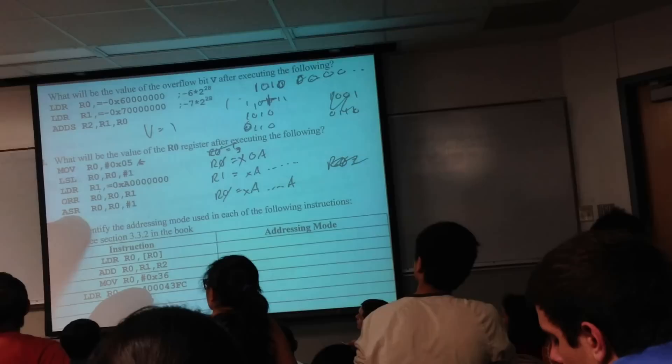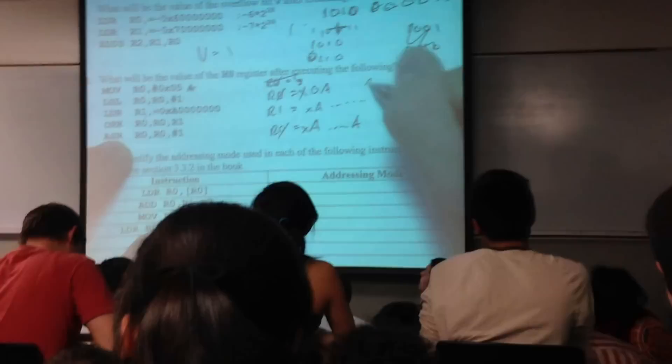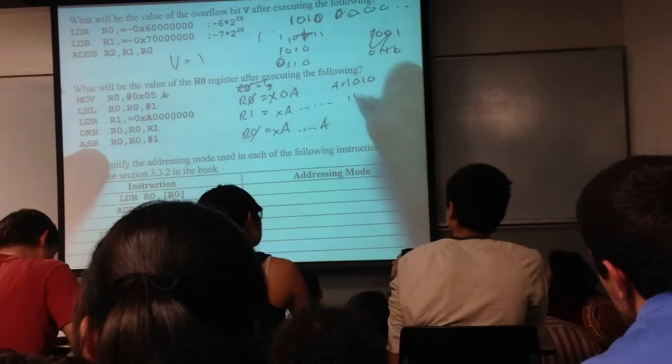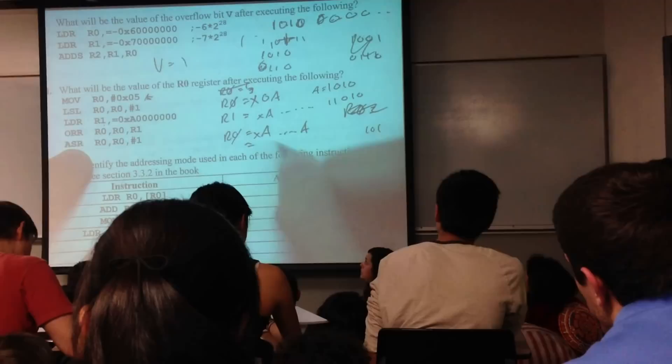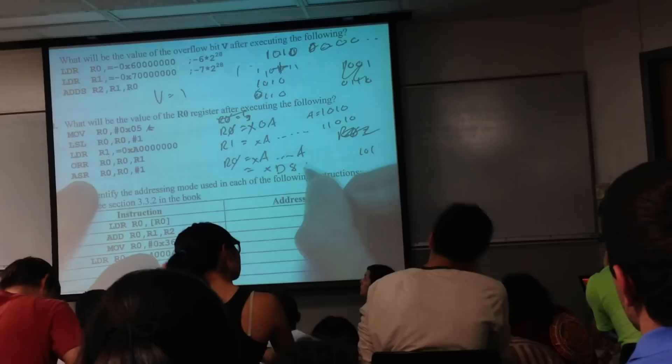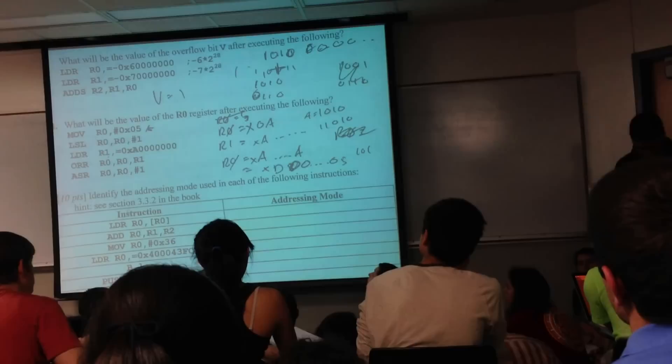And then what is ASR? Arithmetic shift, right? Sign extent. So what's going to happen here? If I shift it around by 1, hex A is equal to 1, 0, 1, 0. So when I shift this first A, what do I get? I'm going to get 1, 1, 0, 1, 0. And then on the bottom, I'm going to lose that 0. I'm going to get 1, 0, 1. So the final value is going to be hex D, 0.